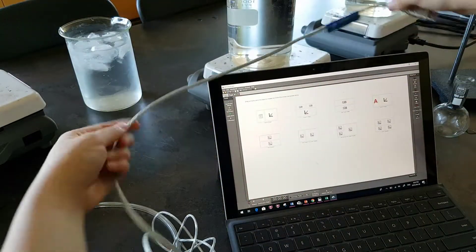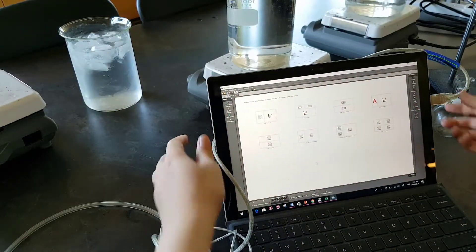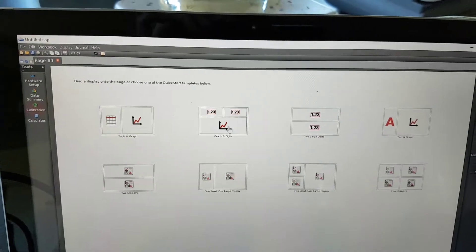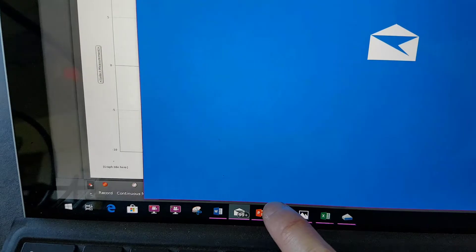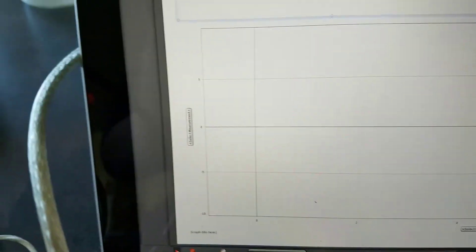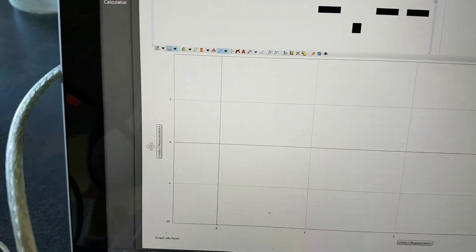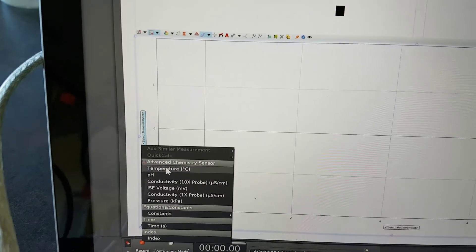Hopefully you have PASCO Capstone set up already. After you push it in, if you want to go to graphs and digits, double check that your sensor is connected by looking at the bottom. It should say advanced chemistry sensor or something of the like. Here, set up your axes.